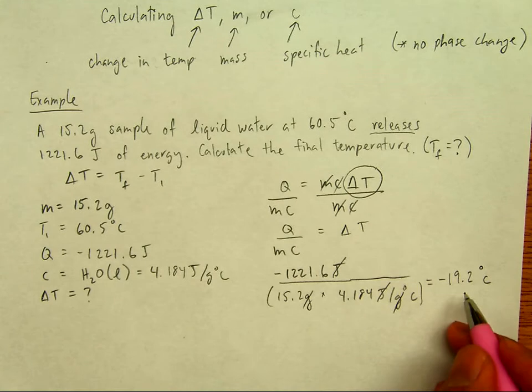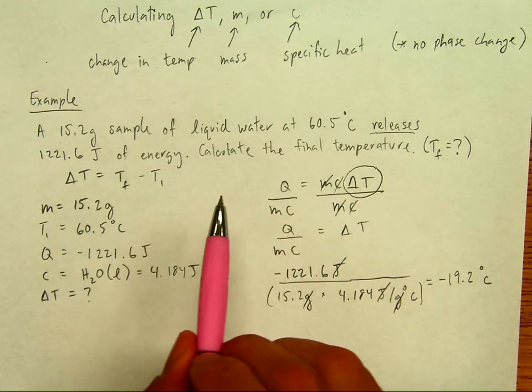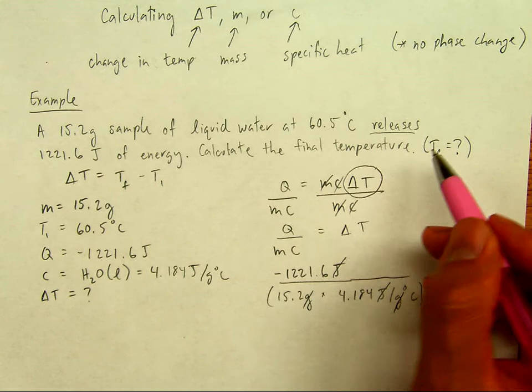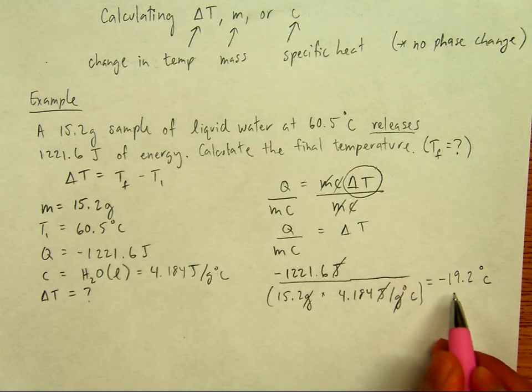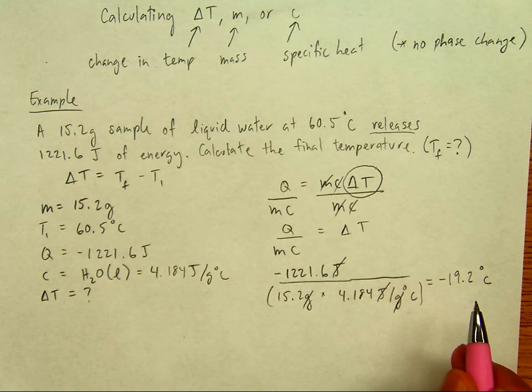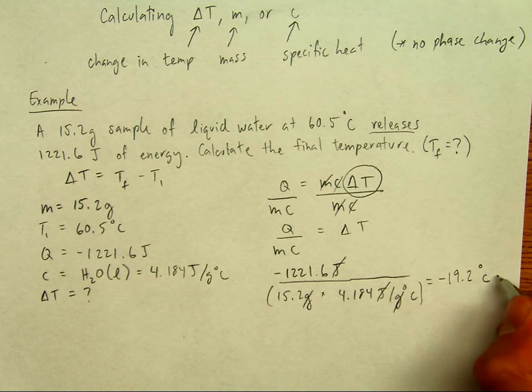Now, this makes sense to me because it says that the energy is being released, which is going to be exothermic. So I need a cooling of my system. So it has to be a negative change in temperature. This is going to be equal to delta T.